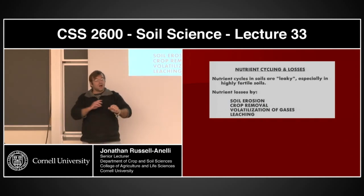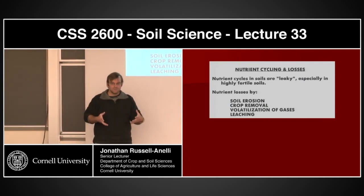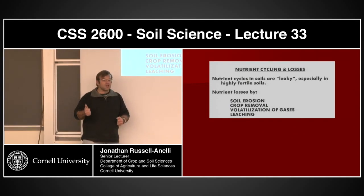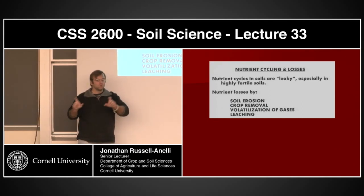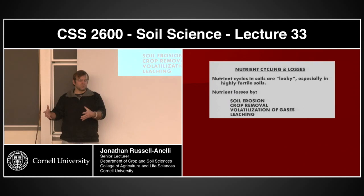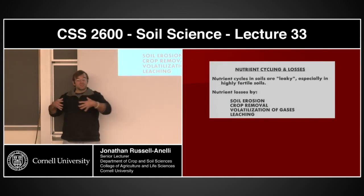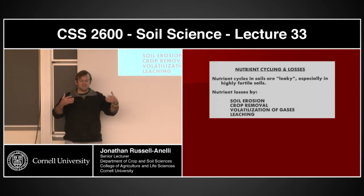Let's go back to this idea about highly fertile soils tending to be more leaky. It's not that they are inherently losing more stuff because they're highly fertile. It has to do with the fact that if you think about where the pools of nutrients are — if the pool of nutrients is in the soil and the soil has a lot of fertility versus soil that doesn't — given the same amount of erosion from each, which one's going to be losing more nutrients? The one that has more fertility. If I lose a pound of soil from an acre of a highly fertile soil versus a low fertility soil, there's going to be more nutrients in the high fertility soil. Therefore, it is more leaky. The percentage of the entire system may not be any different — I may be losing 10% in both cases — but the absolute amount is going to be different.